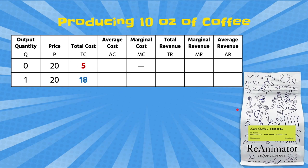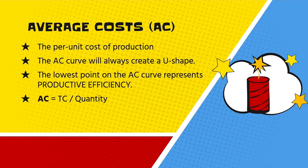A shout-out to a local Philadelphia coffee maker, Reanimator Coffee — one of my colleagues really loves this coffee, and it presents a nice example of a very competitive market. Average costs are the per-unit cost of production, and the average cost curve will generally be a U-shaped curve on your graph. Average costs are just total cost divided by the quantity or output.